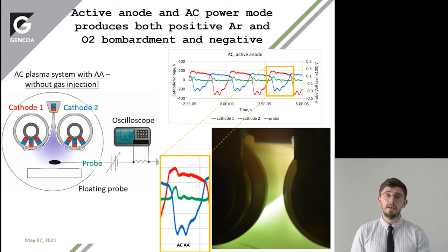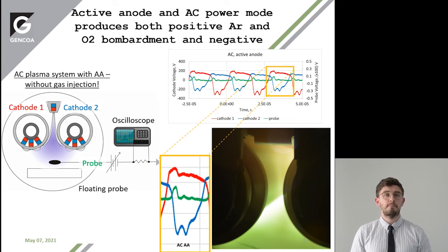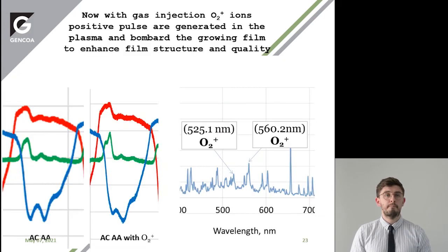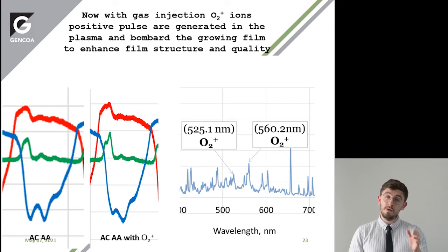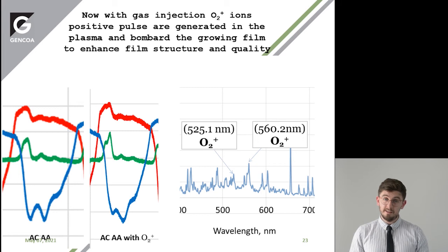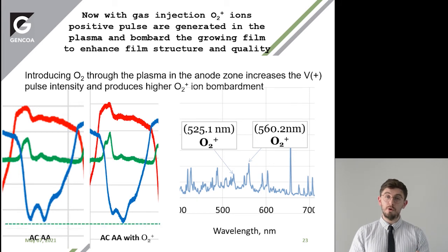We can then compare this to the voltage waveform when we inject the gas through the active anode. On the left, this is an AC system with the active anode but the gas injected through the walls. And on the right, this is the voltage waveform to the probe with the gas injected through the active anode.